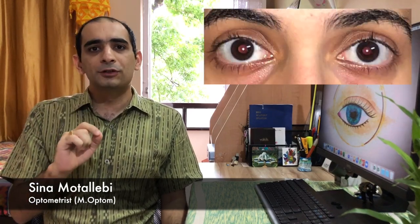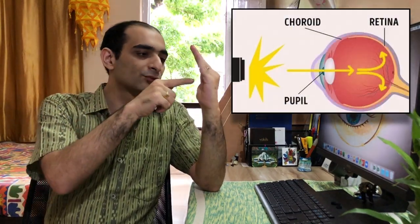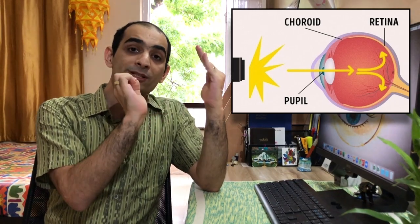Have you ever wondered what causes red eyes in photographs? In today's video, we'll explore some of the causes. The eyes appear red in photographs when the camera captures the light reflecting off your subject's retinas when the camera flash is used at night or in dim lighting. Light travels through the optical system of the eye and gets focused on the retina, which